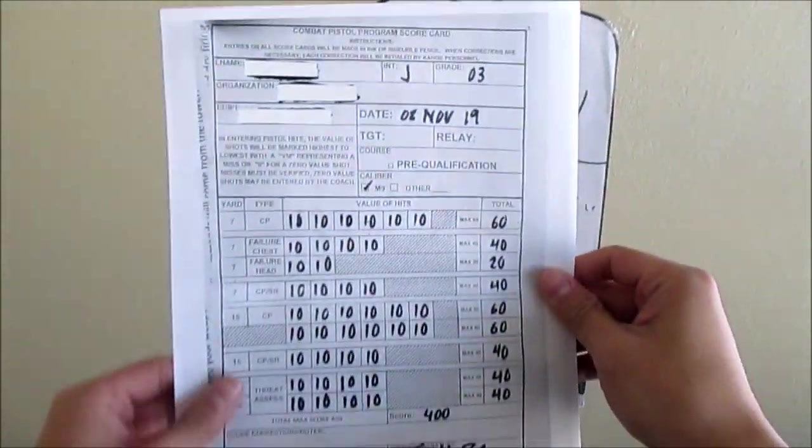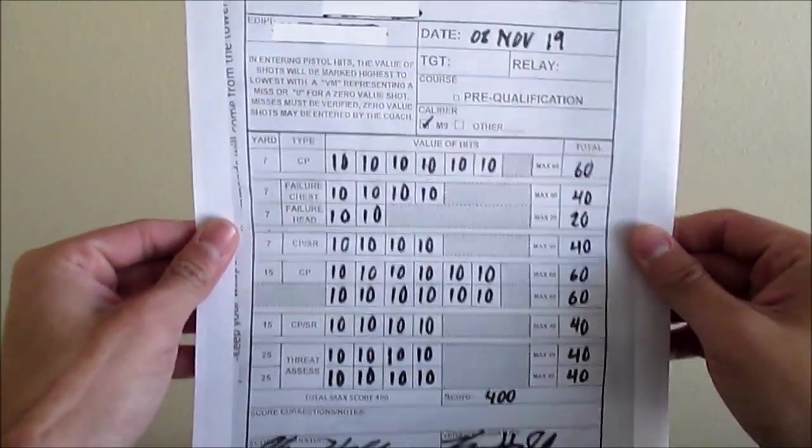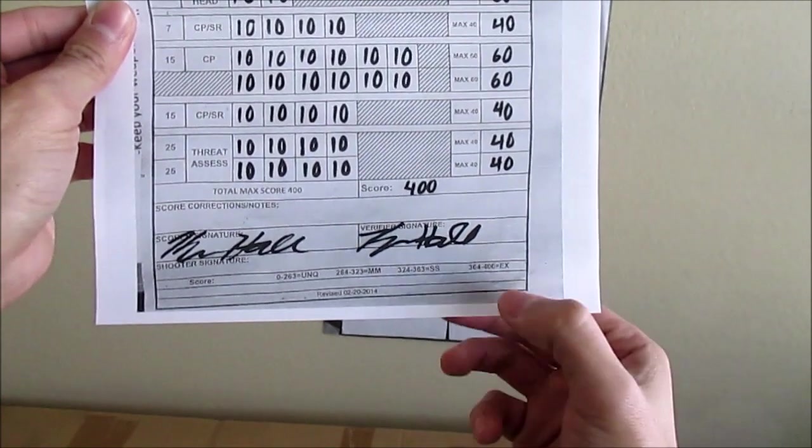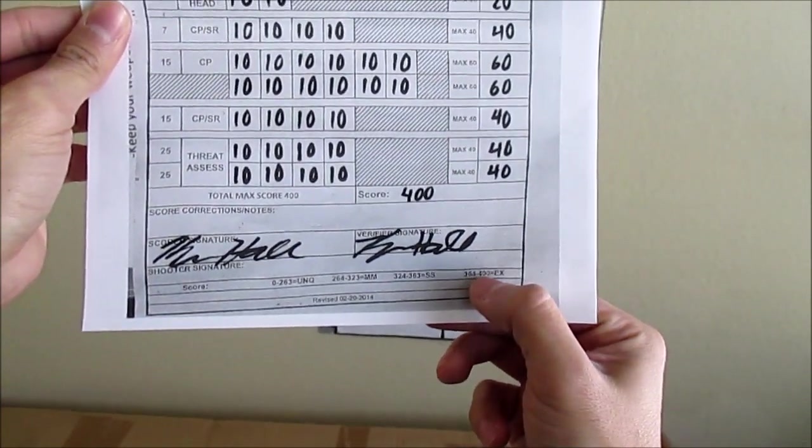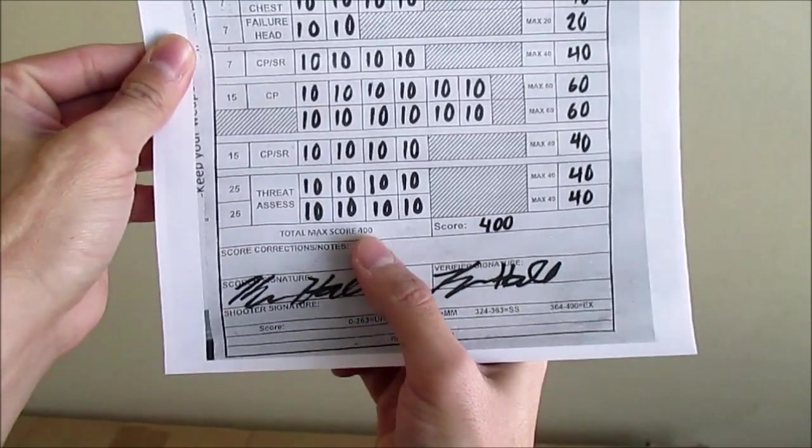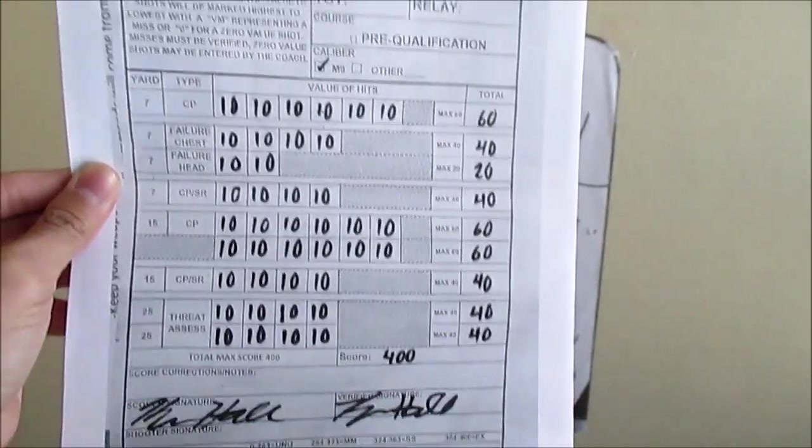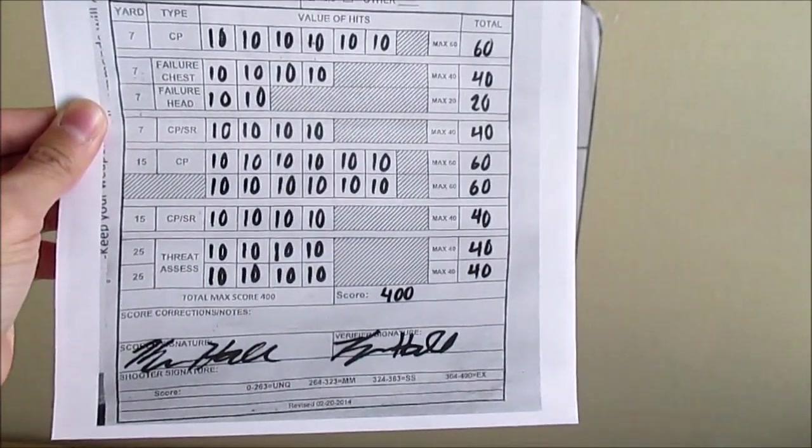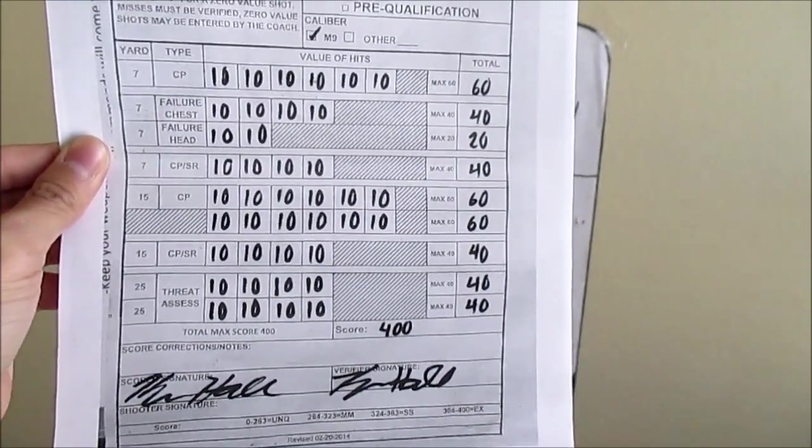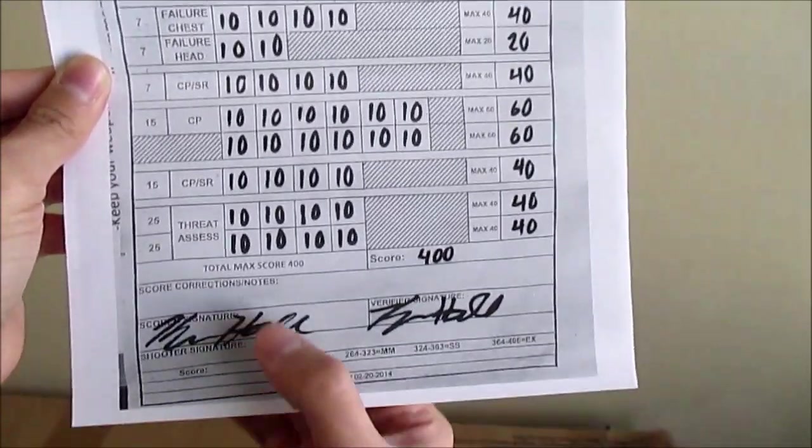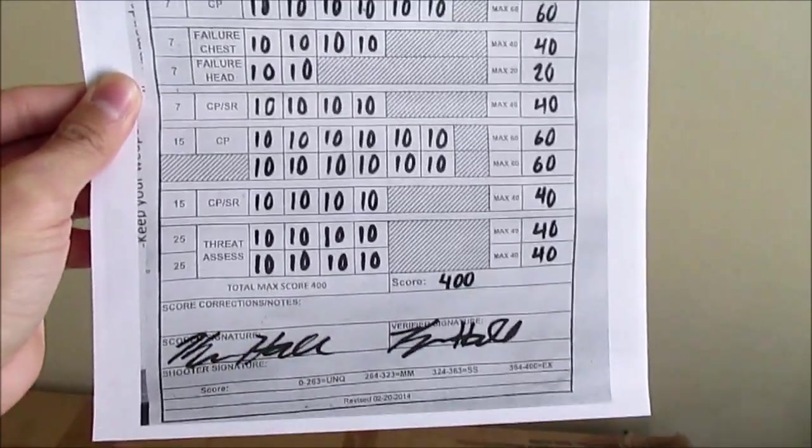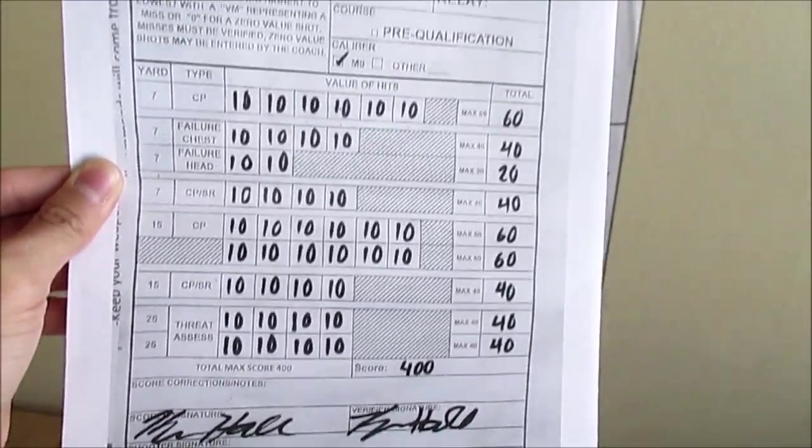So this is my scorecard. You can see on the bottom here it says there's a total or max score of 400 points. To get an expert you have to get 364 points. Each round that you shoot has a max value of 10 points and so you'll be shooting 40 rounds throughout the qualification.